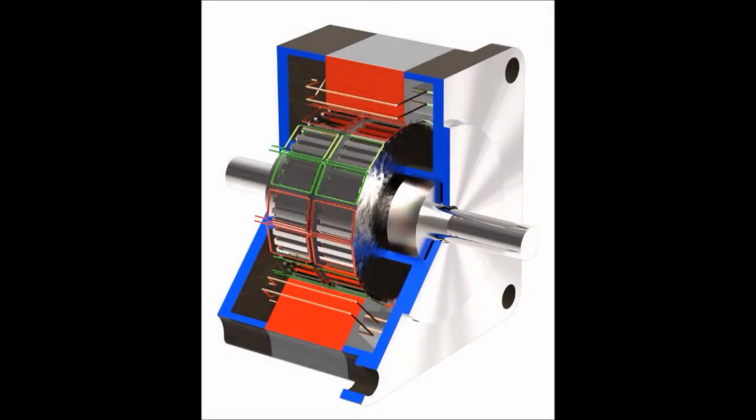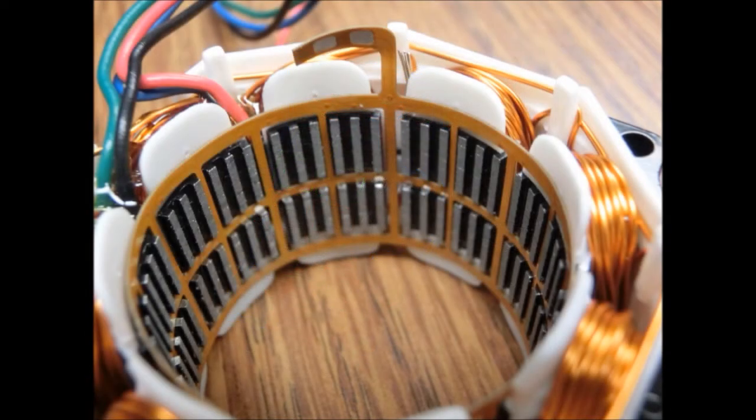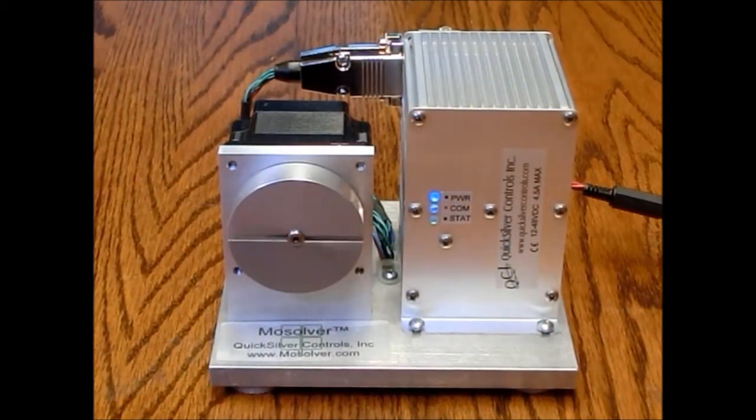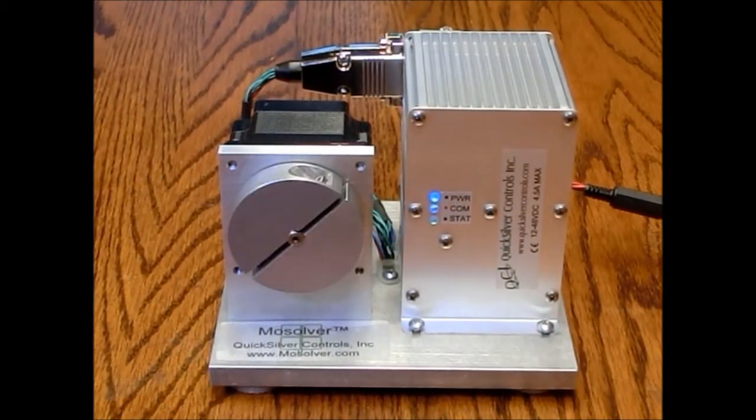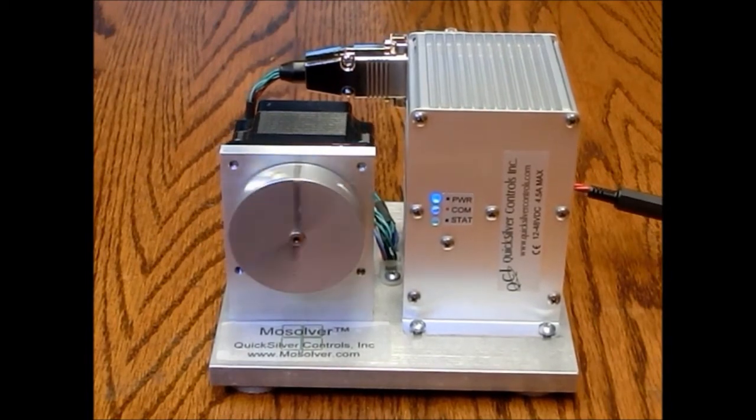The Mosolver is a combination motor and resolver built on the same magnetic structure. A sense coil has been added within the structure of the stator to sense a portion of the PWM signal. The coupling varies according to the position of the rotor. This produces 32,000 counts per revolution as well as commutation information providing for excellent motion control.